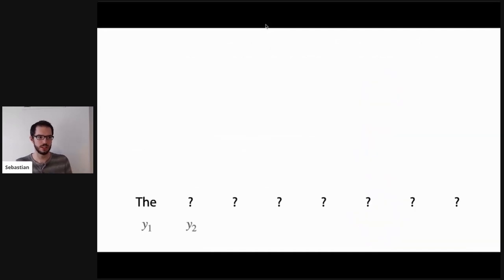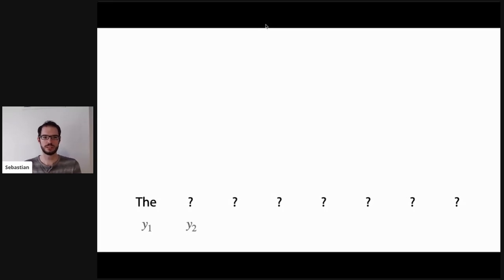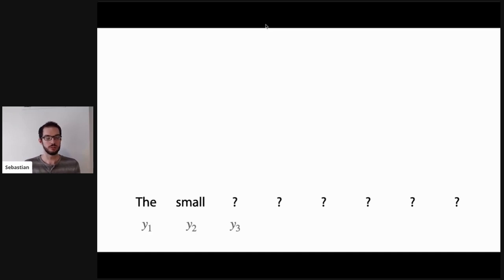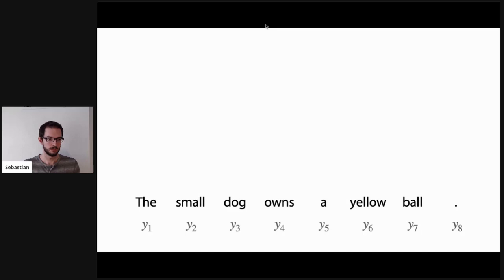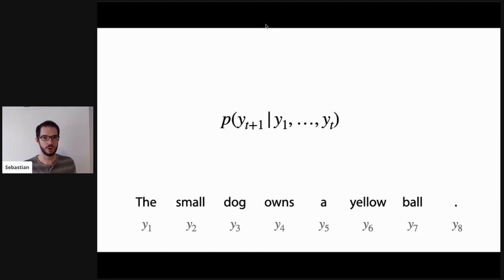Starting with background: we have a problem where we want to predict the next word given the context. Our context is a token Y1, which is 'the', and our goal is to predict the second word Y2, for example 'small'. The next token to predict is Y3 given the context 'the small' — and so on through 'dog owns a yellow ball.' This is called language modeling, and the notation is that we want to predict token Y_{t+1} given the context Y_1 through Y_t.